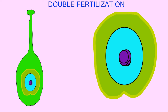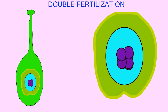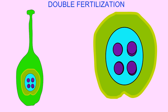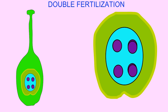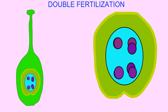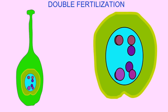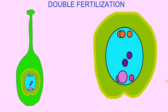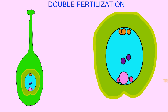When the Megaspore mother cell undergoes meiosis, it produces four daughter cells, which then undergo mitosis to produce eight. Two of these will fuse to result in seven cells with eight nuclei.